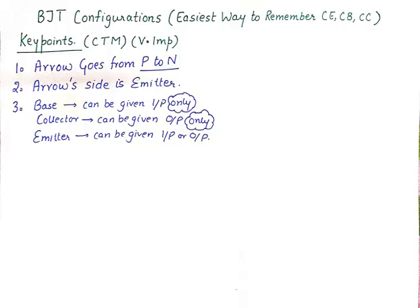Before we go on to identify the configurations in a network, we need to remember some key points — ones that you need to commit to your memory. So these are super important points. The first one being: the arrow goes from P to N.